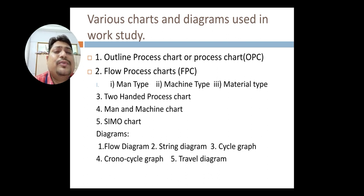Then we would like to see the various charts and diagrams that are used in work study. First chart is outline process chart or process chart. In outline process chart and process chart, we can get the information about the total number of operations and inspections that are required to carry out a particular production work. In that, you need not get the time for transportation or distance for transportation.